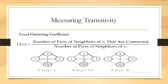In the second case, the denominator is 3 because there are three pairs of neighbors: (1,2), (1,3), and (2,3). But only the pair (2,3) is connected, so the answer is 1/3. In the third case, the number of pairs of neighbors of V1 is also 3, but no neighbors are connected, so the answer is 0/3 = 0. This covers how we measure transitivity using global and local clustering coefficients.